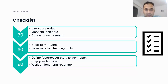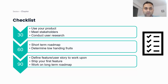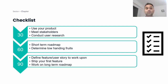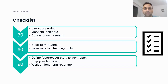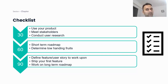Here's a checklist to keep in mind. In the first 30 days: use your product a lot, get well acquainted with it, meet as many stakeholders as possible, and conduct user research by talking to your users. In the second 30 days: draw a short-term roadmap you'd want to implement for your product and identify the low-hanging fruits you want to work on. In the final 30 days: define the user stories or features you want to work on, ship your first feature, and work on the long-term roadmap.